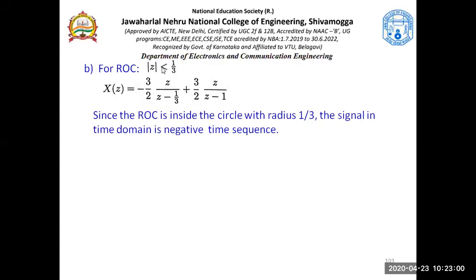For less than 1/3, since the ROC is inside the circle with radius 1/3, in the previous case the region of convergence was outside the circle with radius 1. Here it is inside the circle with radius 1/3. If it is inside the circle, the time domain should contain the negative time sequences. So which negative time sequence should come with each term is what our interest is now.